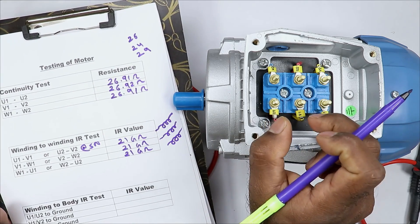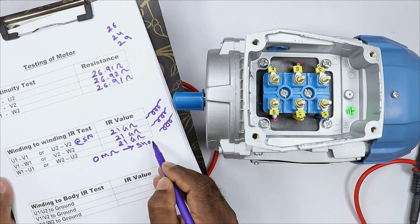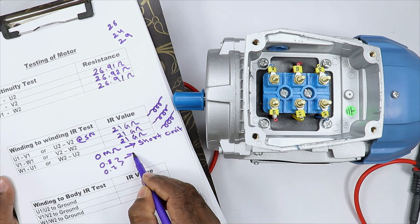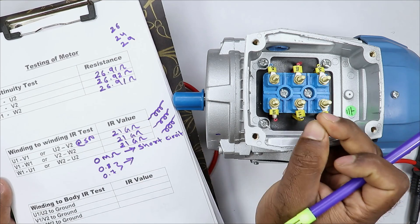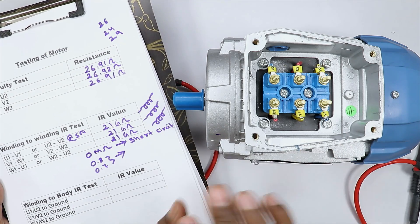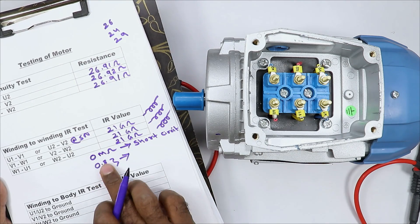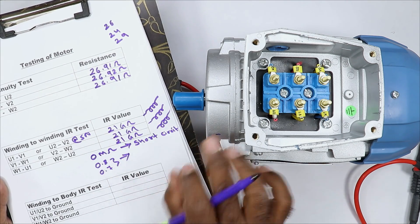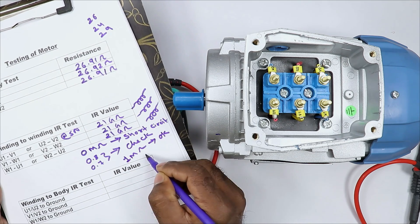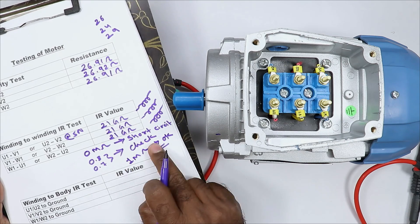If you measure IR value and you get 0 mega ohm, it means the winding of that motor got short circuited. Besides, if you get values like 0.8 or 0.7 mega ohm, then the insulation of the winding got weak and those windings are soon going to short circuit with each other. It means if you get less than 1 mega ohm, the motor needs to be checked. Causes can include dust or water inside the motor, which also decreases IR value. If IR value is more than 1 mega ohm, then the motor is fine. IR value of the motor must be at least 1 mega ohm.